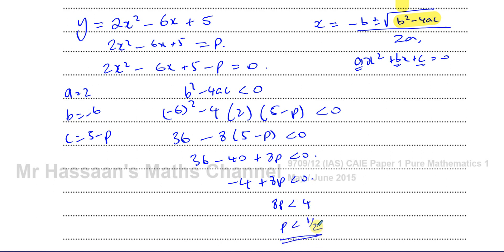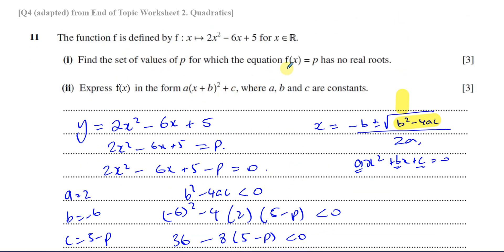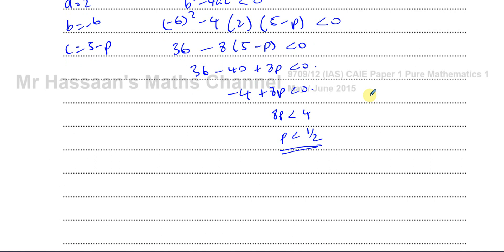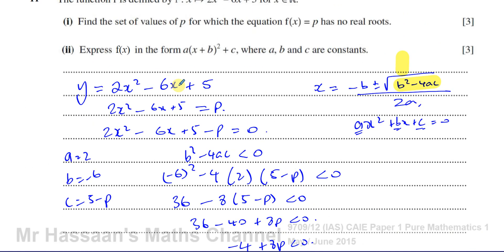So when p < 1/2, that is the set of values of p for which the equation f(x) = p has no real roots. You can write it as p < 1/2, or in set notation: {p : p < 1/2, p ∈ ℝ}. Either way is fine.